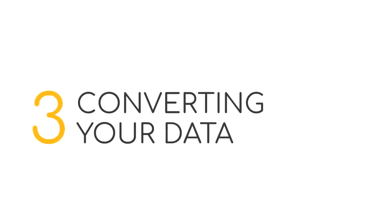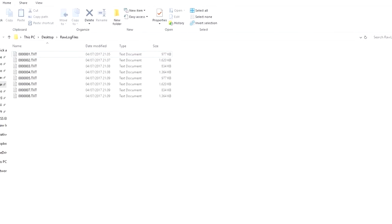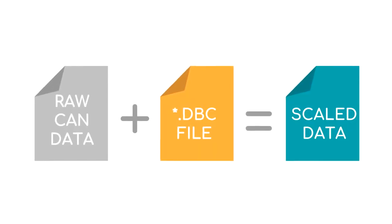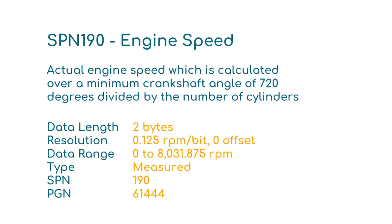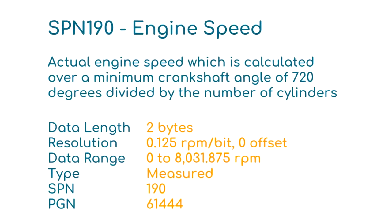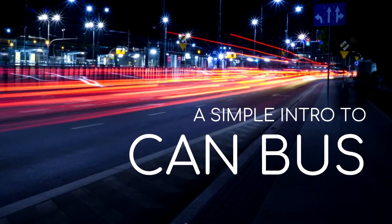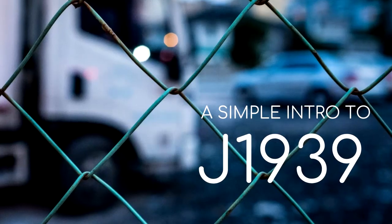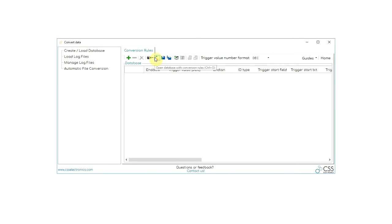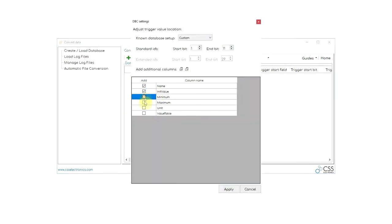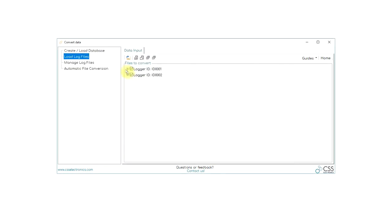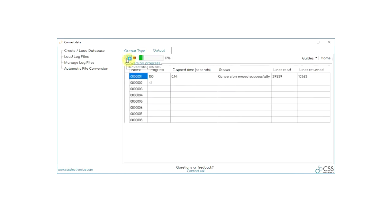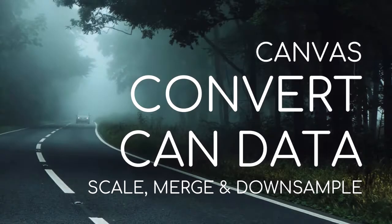Step three: converting your data. Now you've logged some raw CANbus log files — how do you interpret them? To do so, you need to set up conversion rules. For a specific CAN ID, you'll need to know what part of the eight data bytes to read, and how this should be scaled and offset. For more on this, check our simple intros to CANbus, OBD2, and J1939. In Canvas, you can easily enter your conversion rules or load a DBC file. After this, simply load your raw log files and hit Convert. You now have human-readable data ready to analyze. For more on conversion options, check out our intro articles.